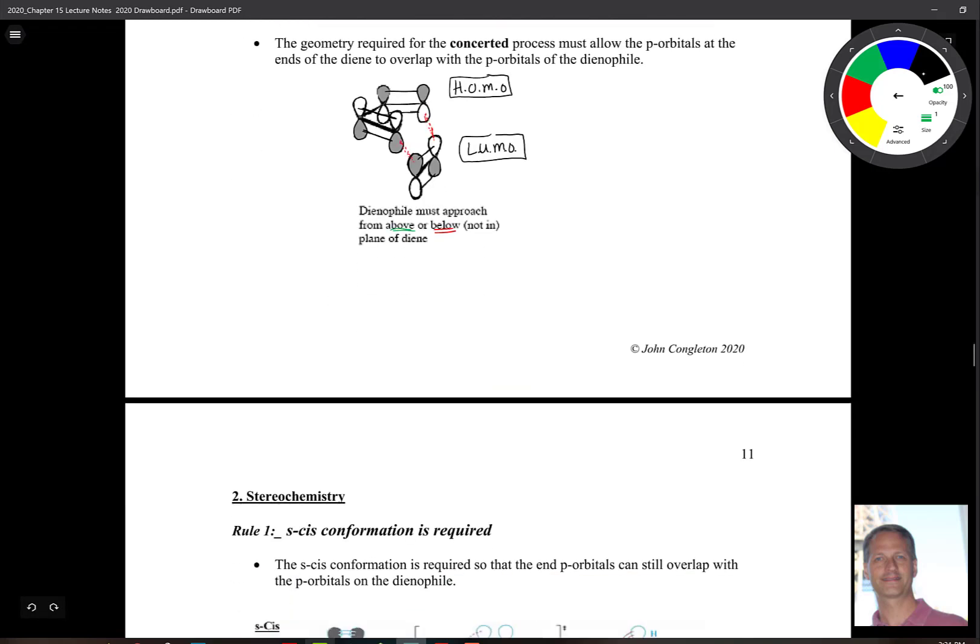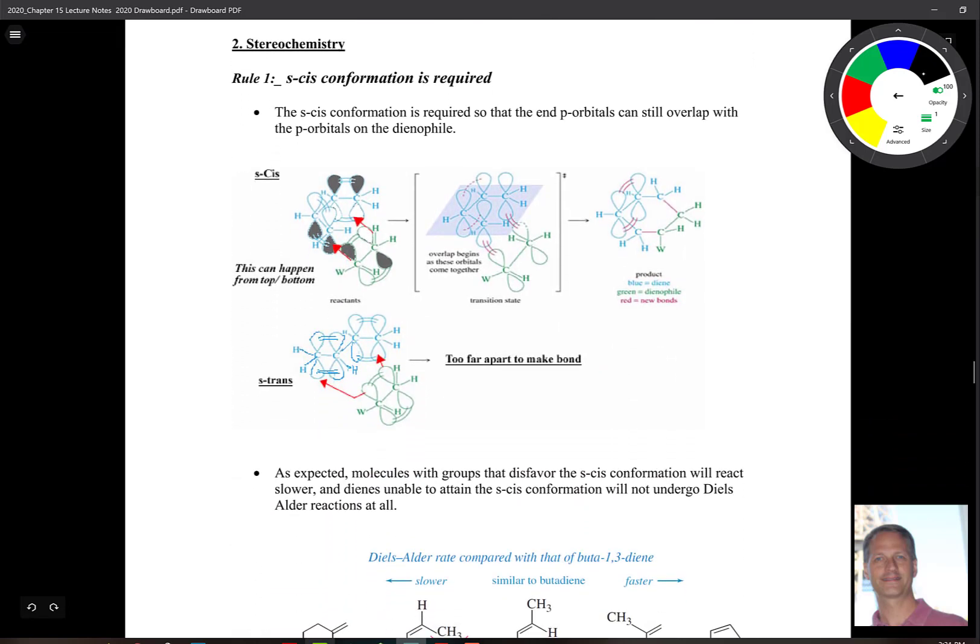So let's start looking at some of the rules. When we talk about this idea of stereochemistry, the first thing that is pretty straightforward to understand is that the S-cis conformation is required. Remember S-cis has the double bonds next to each other. So this is S-cis. And remember that is in equilibrium with S-trans. So S-cis is required. And that's required because the orbitals need to be close to each other to overlap. So here's your S-cis right here. Here's your dienophile down here below. Here's our lobe interacting with this lobe. Here's the other lobe interacting with that. So they need to be close to each other. When they're close to each other, they can touch.